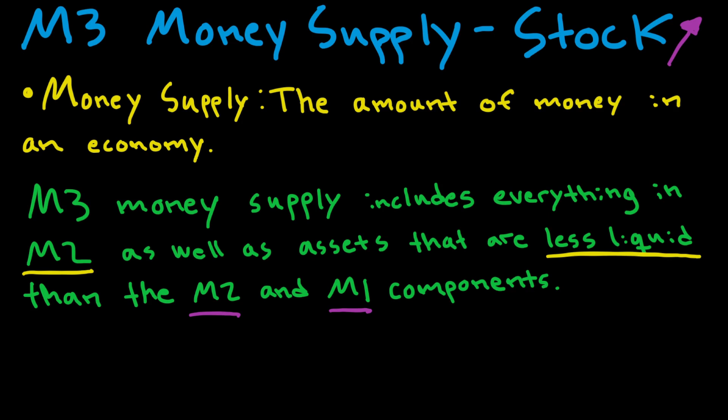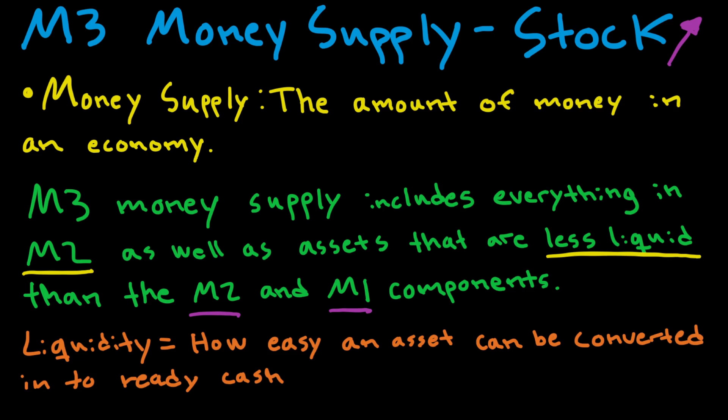And what is liquidity? We can think of liquidity as how easy an asset can be converted into ready cash, so how fast and easy we can actually use the money to pay for stuff. So now let's take a look at how M3, M2, and M1 are related to each other.